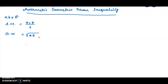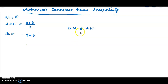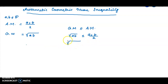For two real numbers A and B, the inequality states that the geometric mean is less than or equal to the arithmetic mean. So root of AB is less than or equal to A plus B divided by 2. For three real numbers, the cube root of A times B times C is less than or equal to A plus B plus C divided by 3.